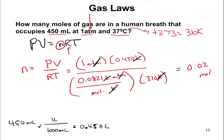On the calculator, you can do 1 times 0.45 divided by 0.0821 divided by 310, or alternatively 1 times 0.45 divided by the quantity 0.0821 times 310 in parentheses — both give the same answer. Make sure you're comfortable with that math and arrive at 0.02 moles.